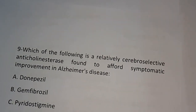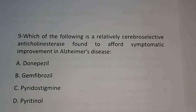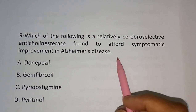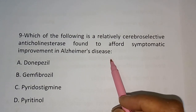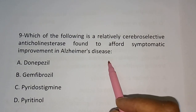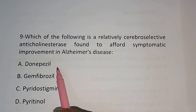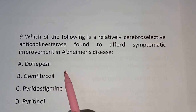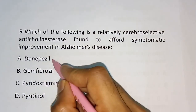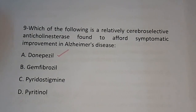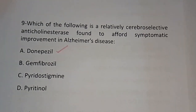Question number nine: Which of the following is a relatively cerebro-selective anticholinesterase used for symptomatic improvement in Alzheimer's disease? Options are: donepezil, gemfibrozil, pyridostigmine, pyridinol. The correct answer is donepezil. Donepezil, galantamine, and rivastigmine are all used for Alzheimer's disease.